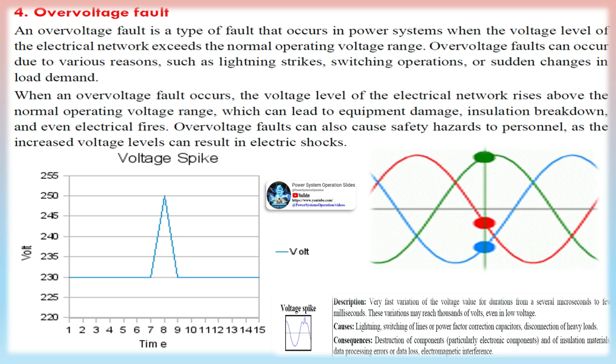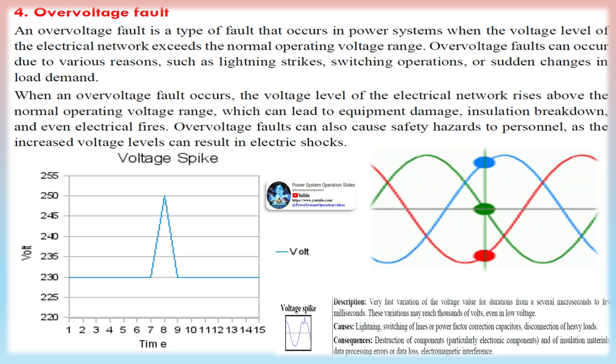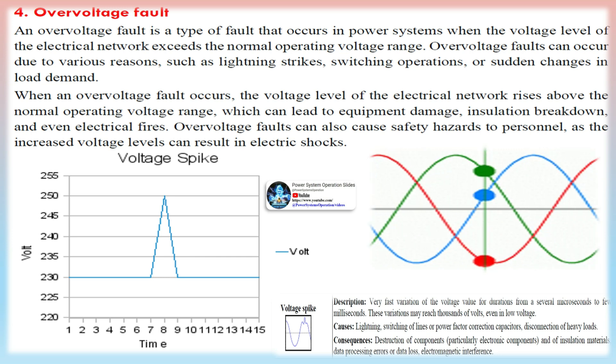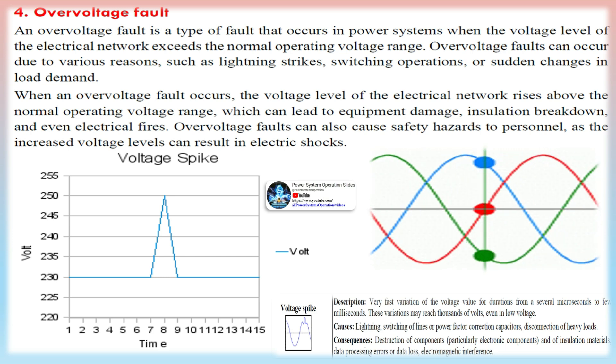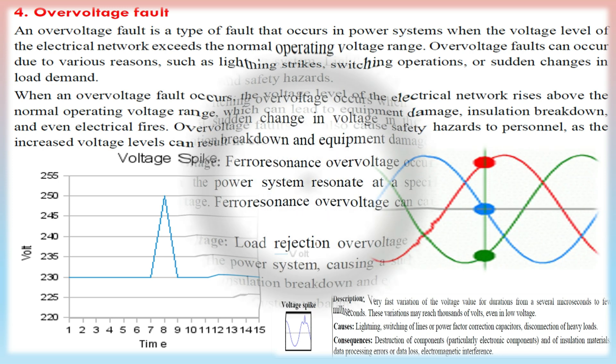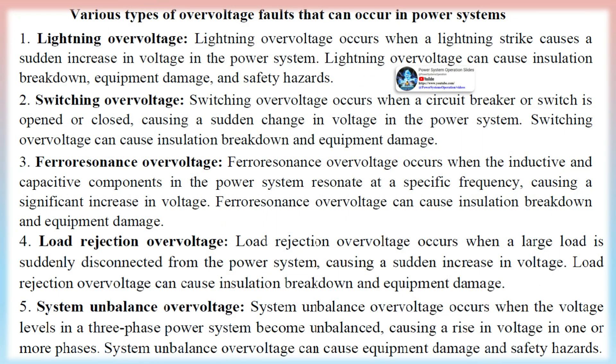Causes of power system faults include: equipment failure, such as a transformer or circuit breaker; environmental factors like lightning strikes, high winds, or ice storms; human error such as incorrect operation of equipment or improper maintenance; cyberattacks, which have become a growing concern with increasing reliance on digital control systems; system instability such as voltage or frequency instability; and sudden changes in load demand.